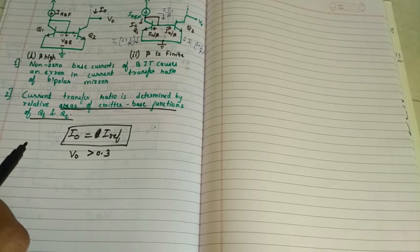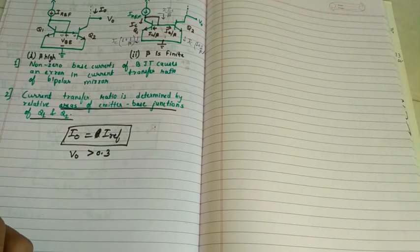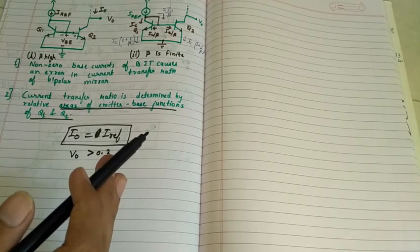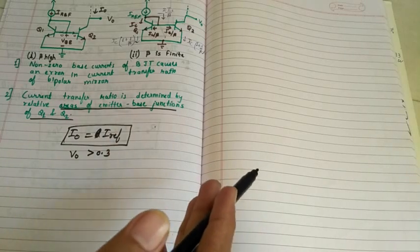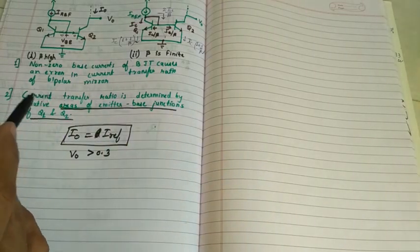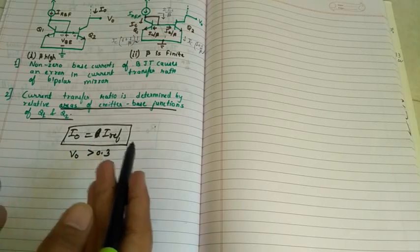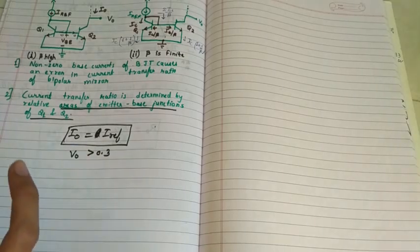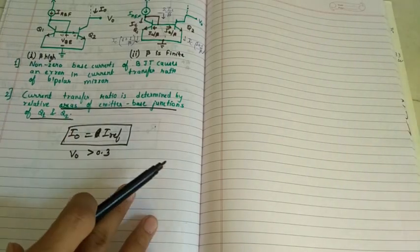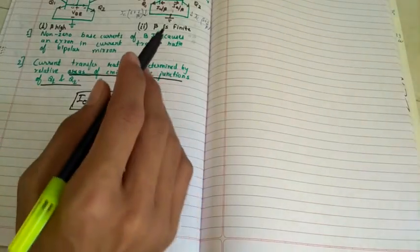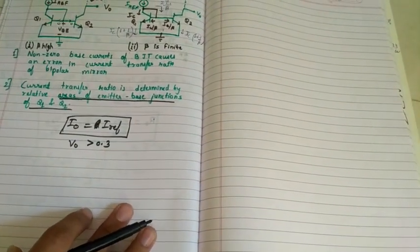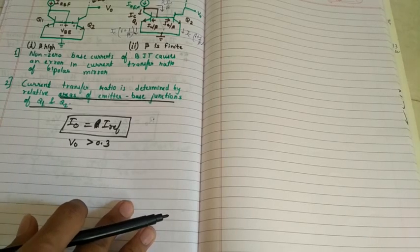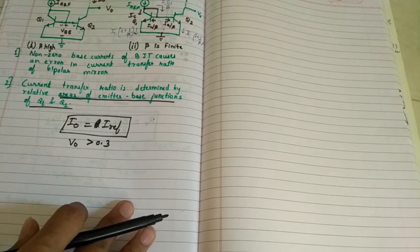But now, what about the case when we want current ratio other than one? Here current transfer ratio is one because I0 equals I-reference and both transistors are matched. But in order to have current transfer ratio to be different, the transistors must be unmatched.